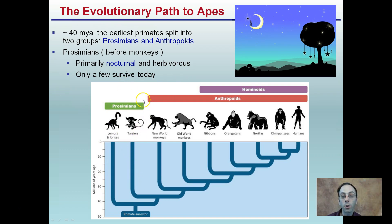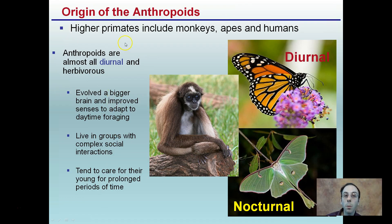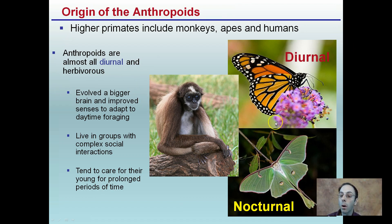Only a few of that ancient group survive today. As a result, the monkeys that developed later and hominids have replaced or reduced the number of these particular animals. Higher primates include monkeys, apes, and humans. These are diurnal and herbivores — diurnal referring to organisms that are awake during the day, compared to nocturnal organisms that mainly function at night.